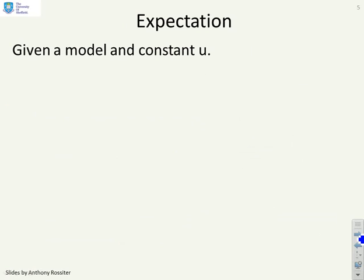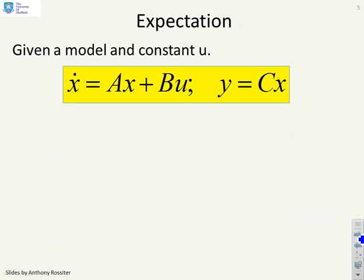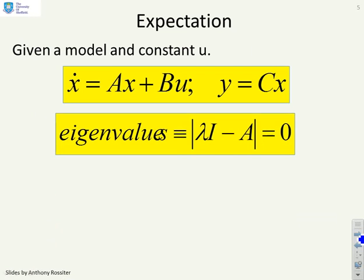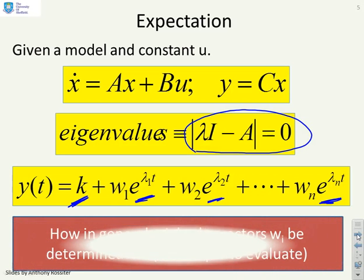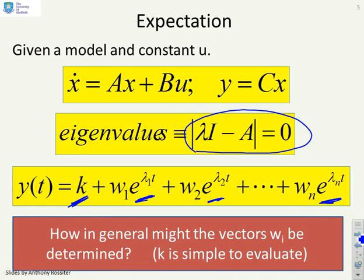So what's our expectation then? If we're given a model and a constant U - X dot equals AX plus BU, and we're told that this U is a constant - and we also know that you can find the eigenvalues by solving this equation here, the determinant of (lambda I minus A) equals zero, then the solution must take this form. We have a constant K, and that constant K corresponds to the fact that you have a constant U. And then we have components coming from each of the eigenvalues. You can see them there. So that's what we expect the solution to look like. Of course the challenge is what are these vectors w_i? And that's what we're going to cover in the following.